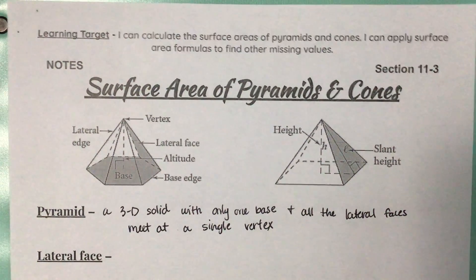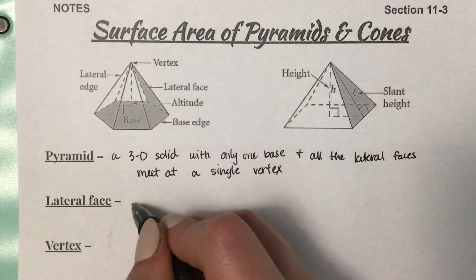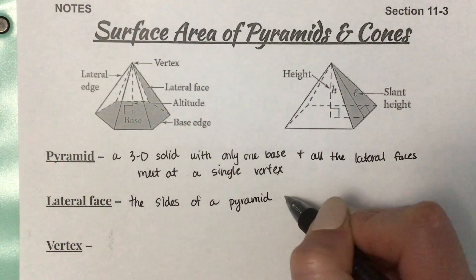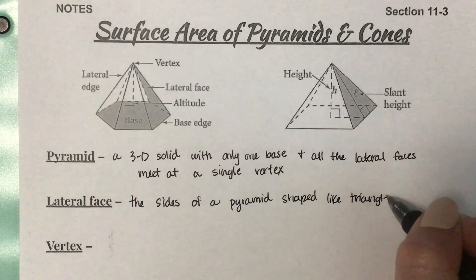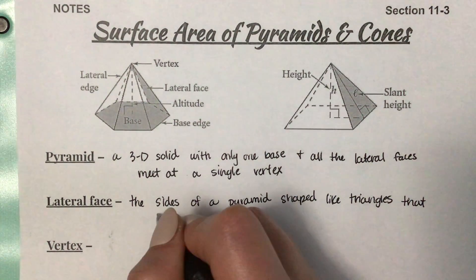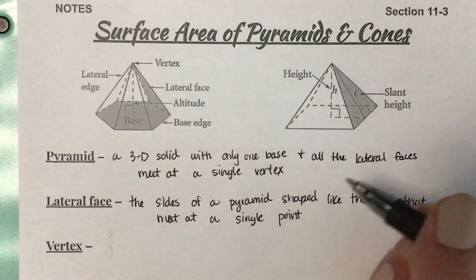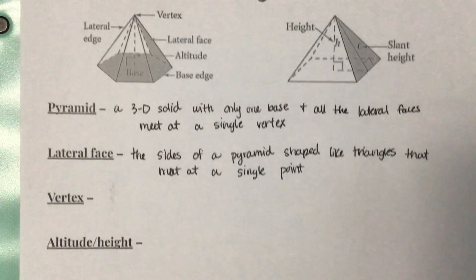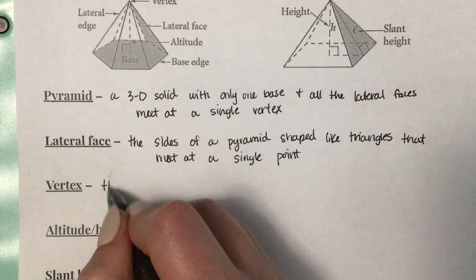Here is a picture of a pyramid. The lateral faces of a pyramid are going to be triangles — they're basically the sides of the pyramid, shaped like triangles, that meet at a single point. That point where the lateral faces meet is called the vertex. The vertex is basically the top of the pyramid — the point at the top of the pyramid.